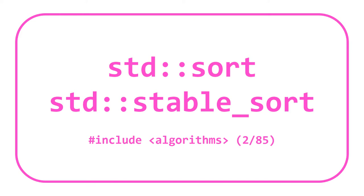We're covering std::sort and std::stable_sort from the algorithms library. There are 85 algorithms in the STL algorithms library, and slowly but surely we're going to get through all of them.